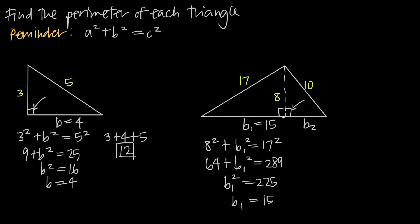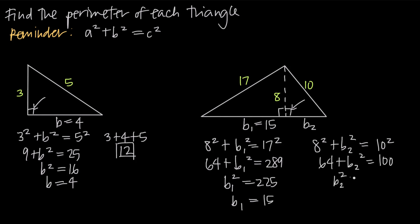Now what about the length of the base of the triangle on the right hand side? Again, we've got a right triangle so we can use the Pythagorean theorem. We know that A is going to be equal to 8 — that's the length of one leg. So we can say 8 squared plus B sub 2 squared is equal to the hypotenuse squared, in this case 10 squared. So we get 64 plus B sub 2 squared is equal to 100. When we subtract 64 from both sides, we get 36. And when we take the square root of both sides, we get B sub 2 is equal to the square root of 36, or 6.